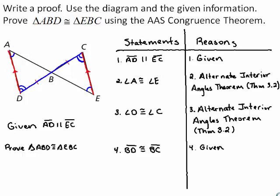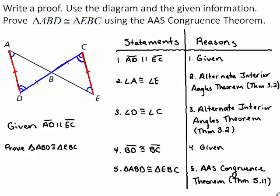Line segment BD is congruent to line segment BC because this was given information in the diagram. Therefore, triangle ABD is congruent to triangle EBC by the AAS congruence theorem, because we found corresponding angles and sides that are congruent in the corresponding triangles.